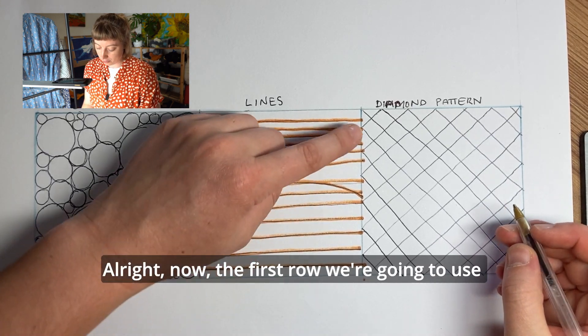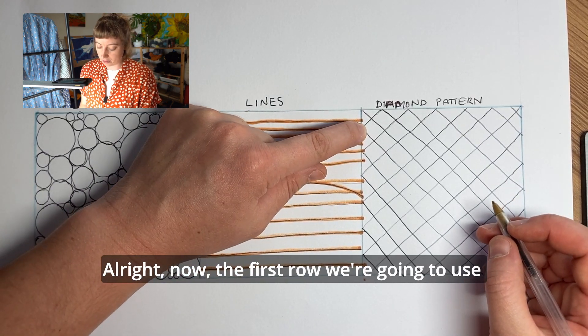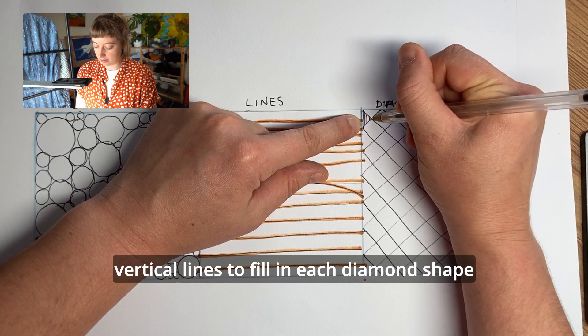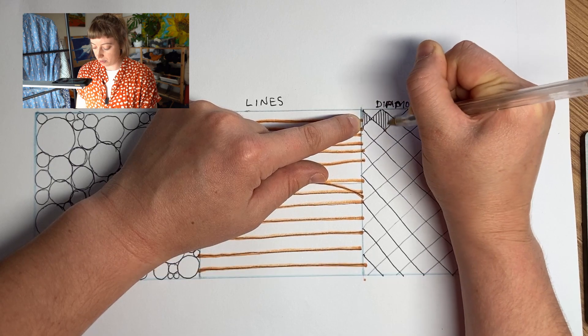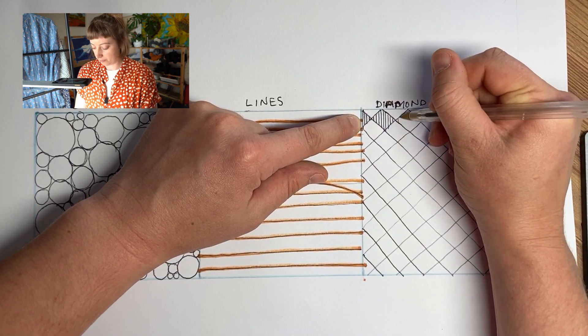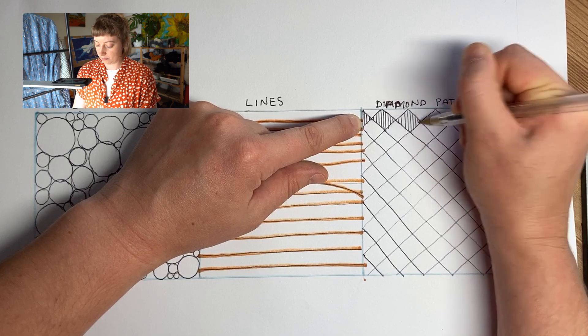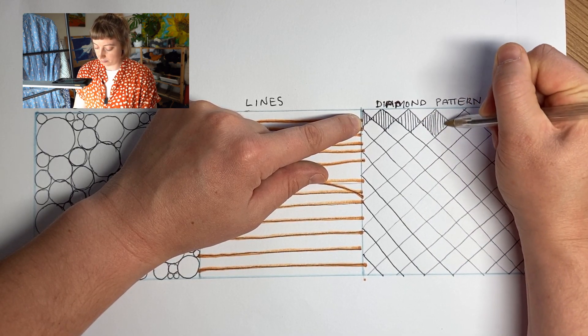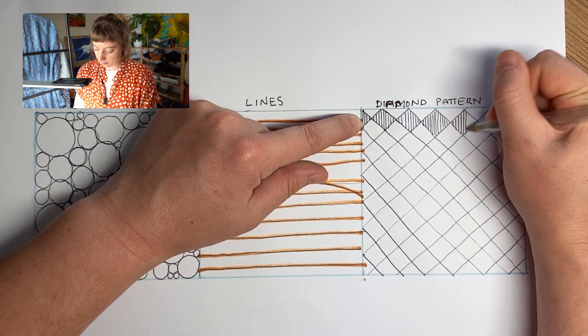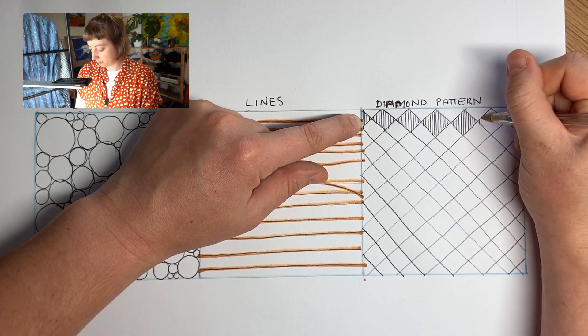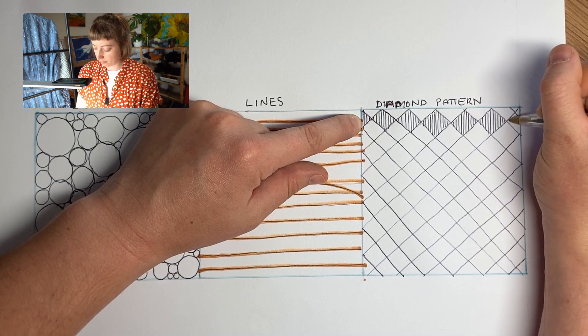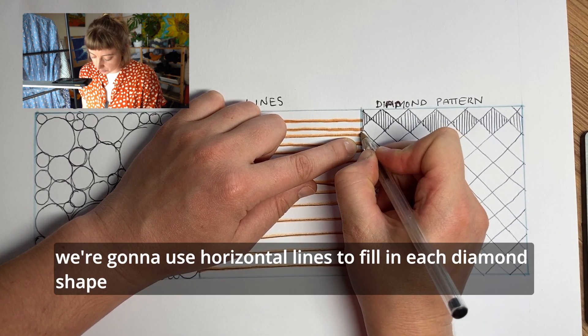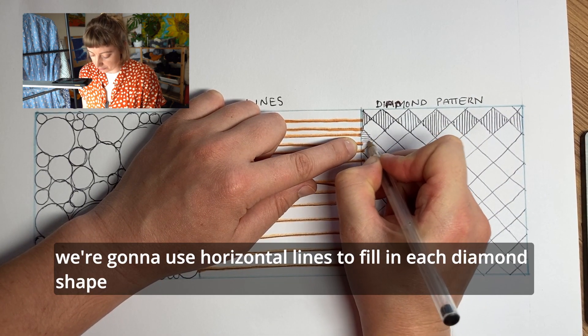Now the first row, we're going to use vertical lines. And then every second row, we're going to use horizontal lines to fill in each diamond shape.